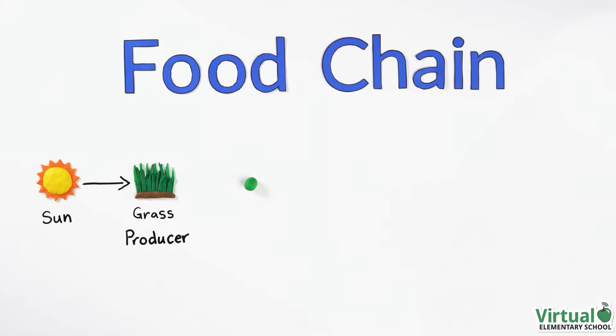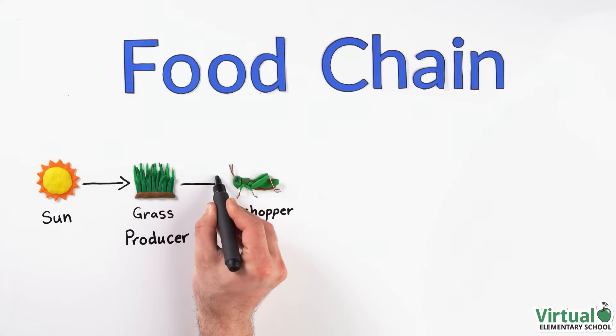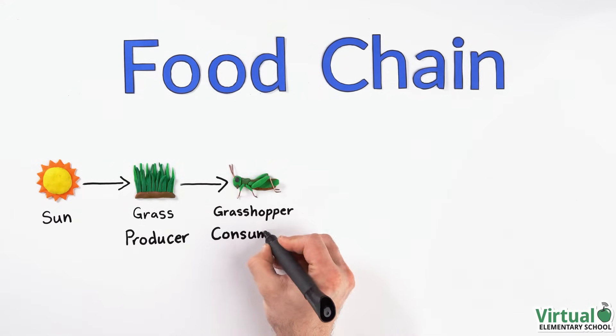Then along comes a grasshopper which eats the grass. Energy is then transferred from the grass to the grasshopper. Because the grasshopper cannot make its own food and gets its energy from other sources, it is called a consumer.